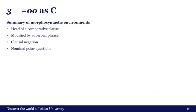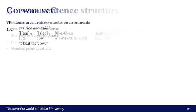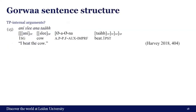To summarize what we have seen: we have an enclitic that can be the head of a comparative clause, can be modified by an adverbial phrase, has scope over clausal negation or attracts the scope of clausal negation, and marks nominal polar questions. To understand why I want to analyze this as a C marker, we have to look at Gorwa's sentence structure at large. In Harvey 2018, the core argument DPs such as 'ani' and 'clay' in example 15 are treated as base-generated outside of the TP, inside an overarching structure called XP.